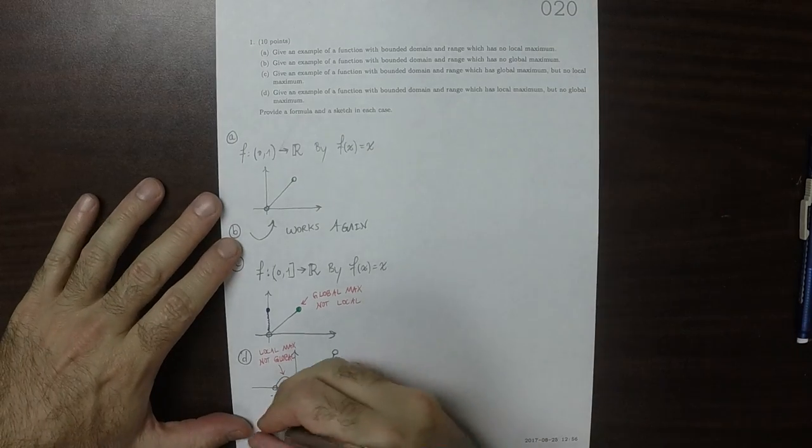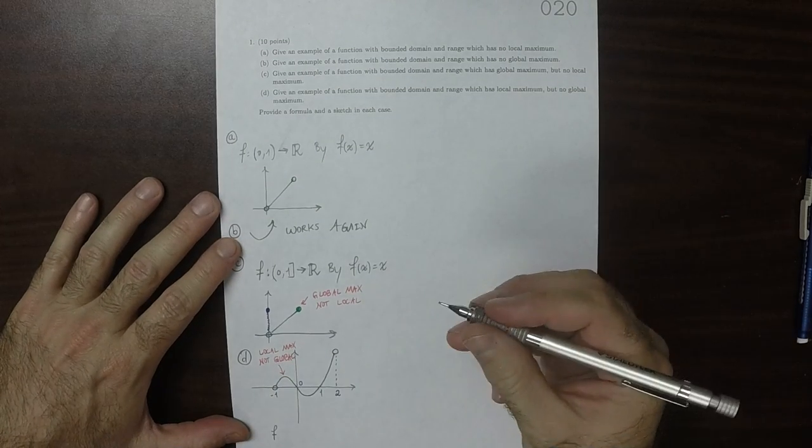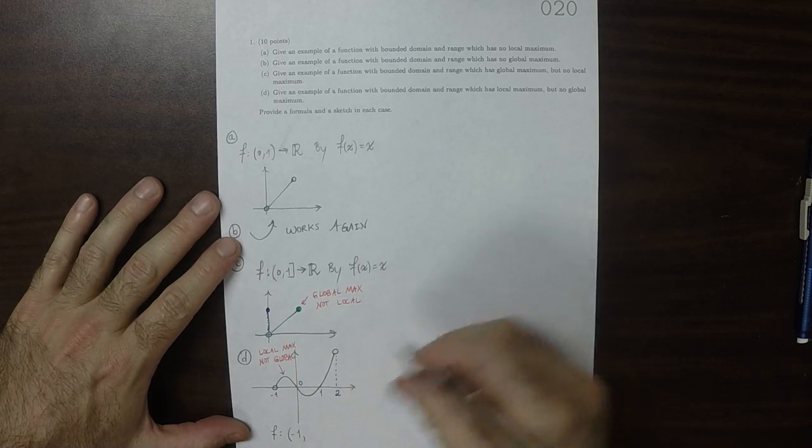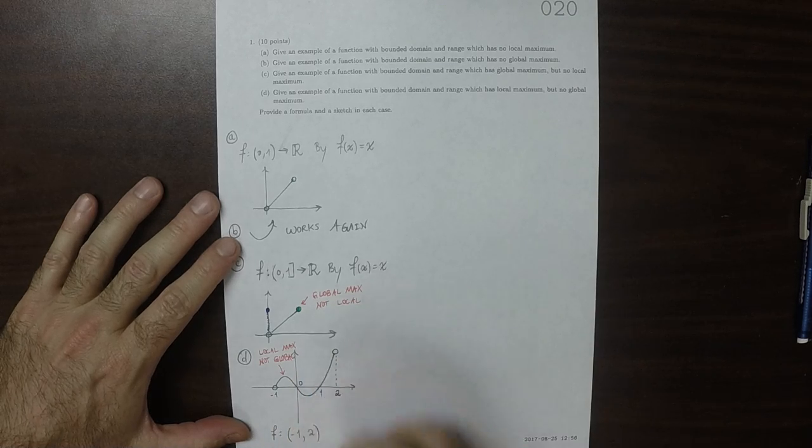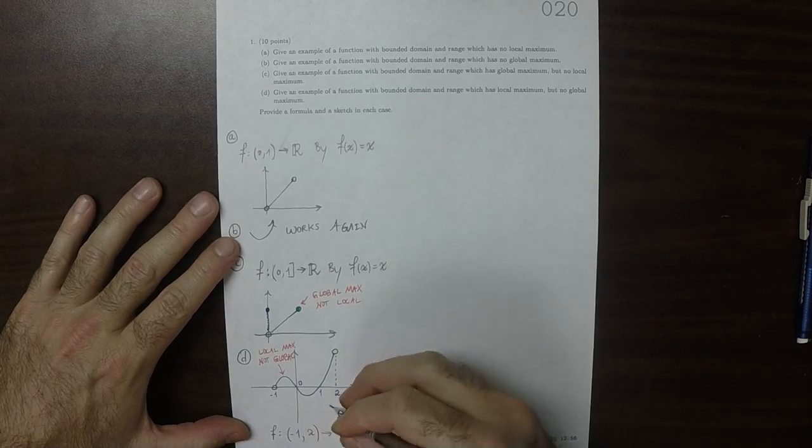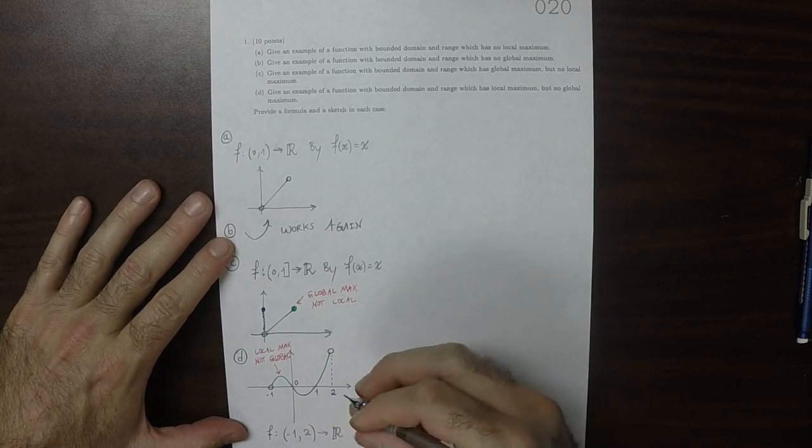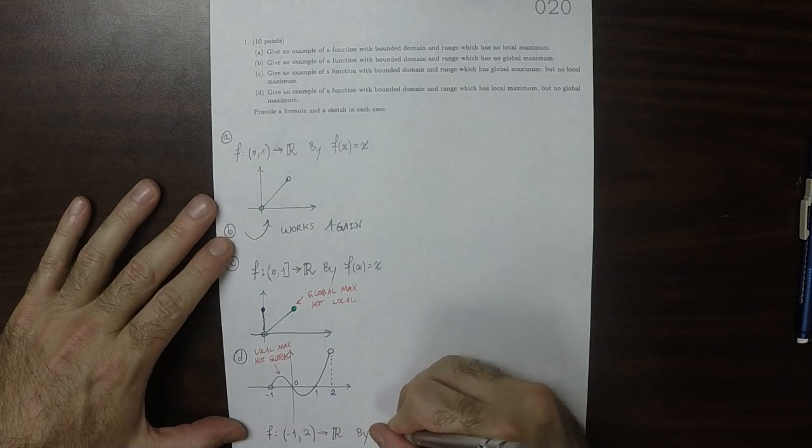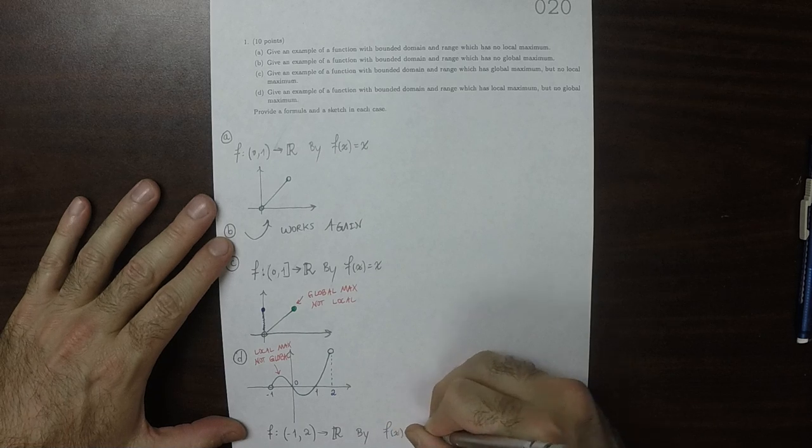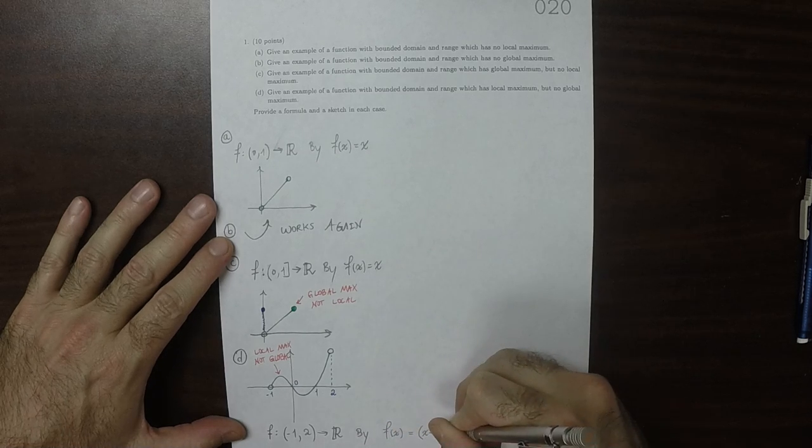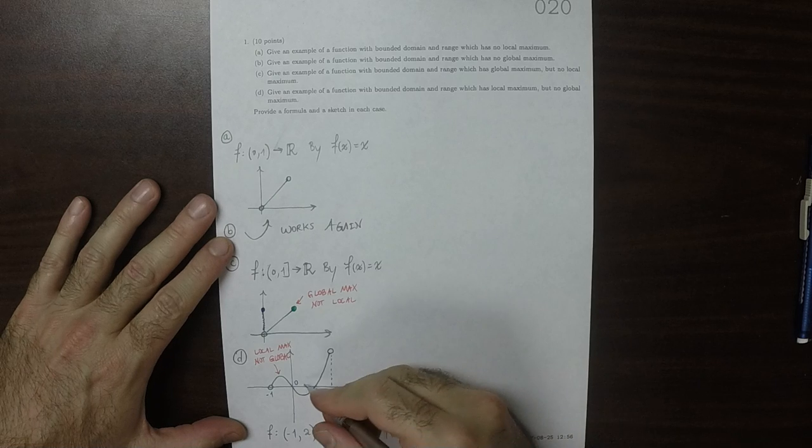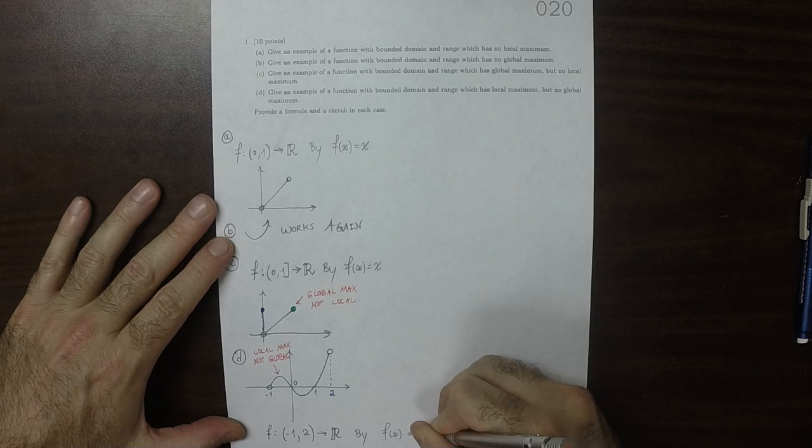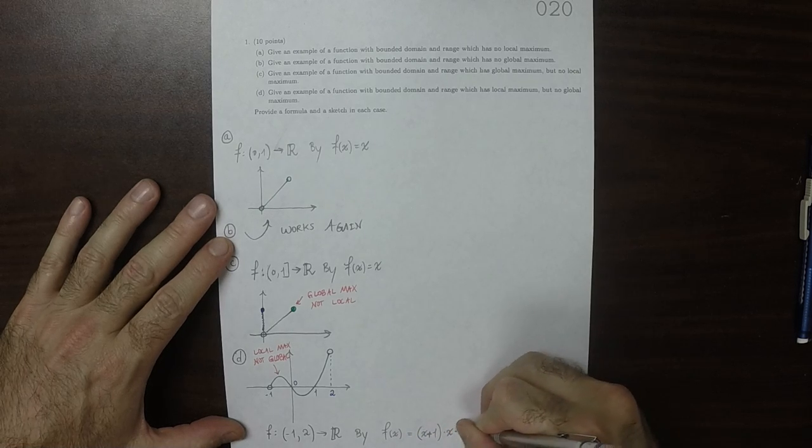So I could say f on the interval [-1, 2] to the reals, and we'll use the formula. Well, f(x) is (x+1) multiplied by x multiplied by (x-1).